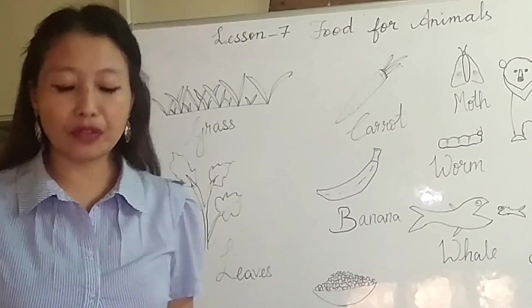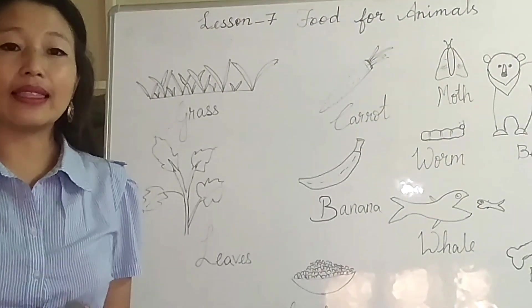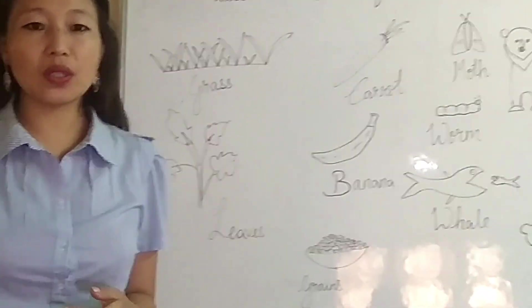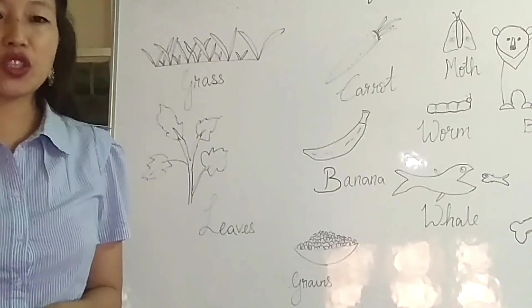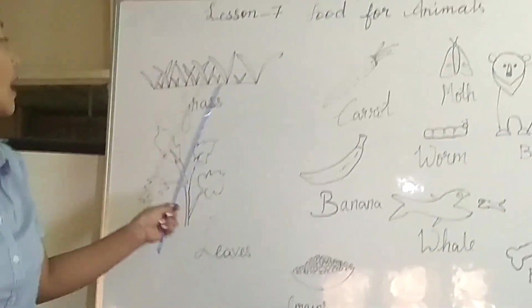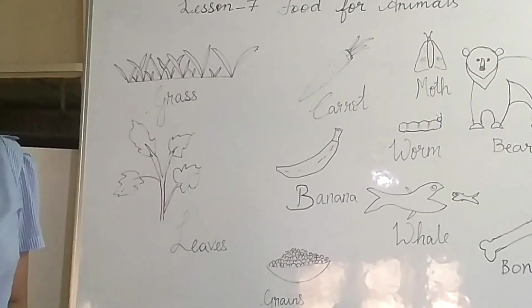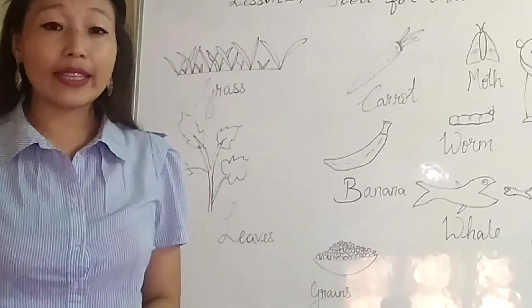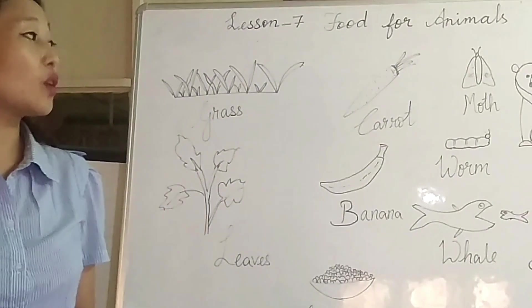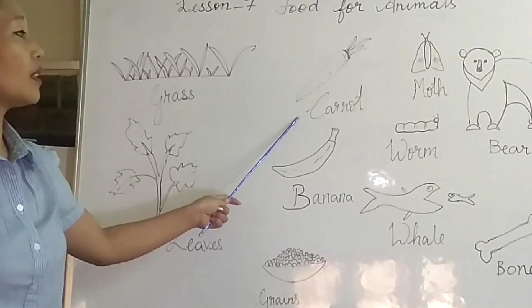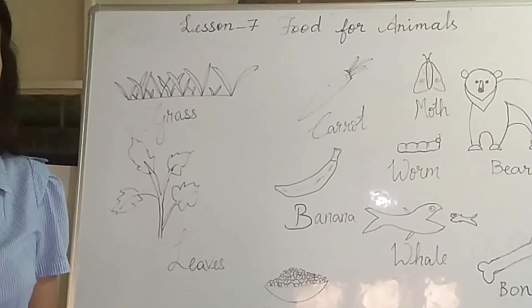Animals eat different kinds of food. Some animals eat grains, grass, leaves, fruits, shoots and roots of plants. For example, a sheep and a goat graze on grass and plant leaves of different plants. Children, all of us like eating carrots, right? In the same way, a rabbit also enjoys eating carrots as its food. An elephant eats sugarcane.